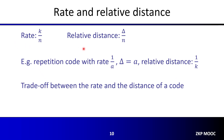We want both the rate and the relative distance to be as large as possible, but there is a trade-off between them: increasing the rate will decrease the relative distance. There are well-studied bounds on the relationship between the rate and relative distance of codes under different settings.